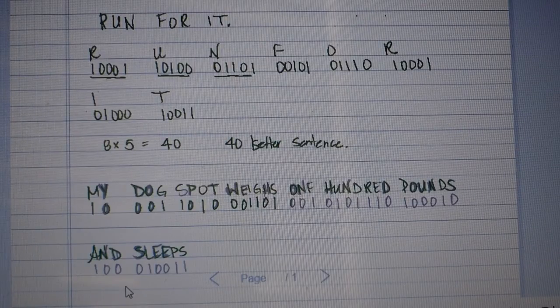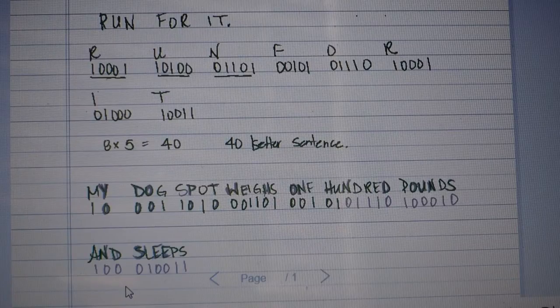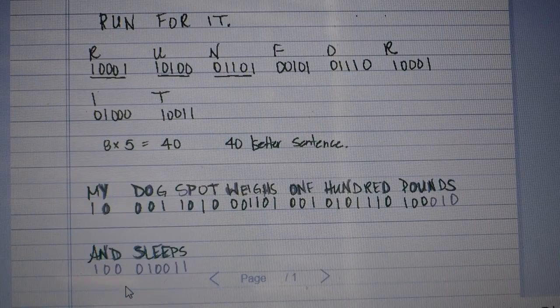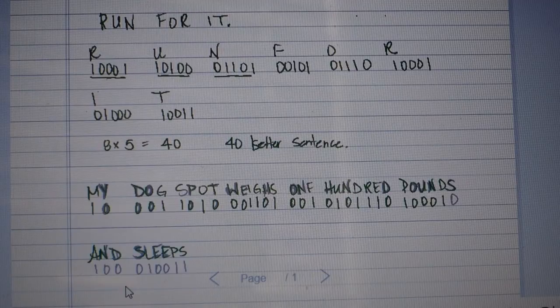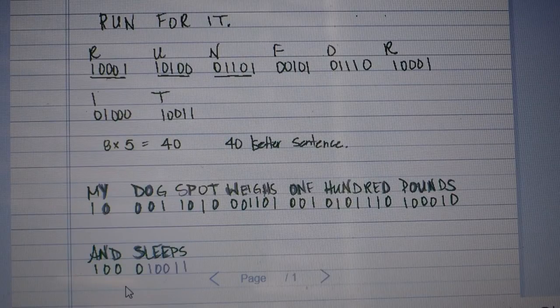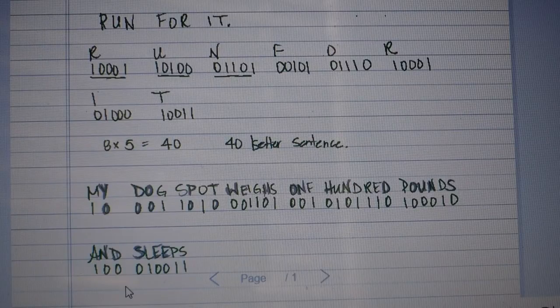And then the F is 00101. Now the O is 01110. Then R is going to be 10001, and S is still left over. So I'm going to start with I, so I've got 01000, and the T is going to be 10011.